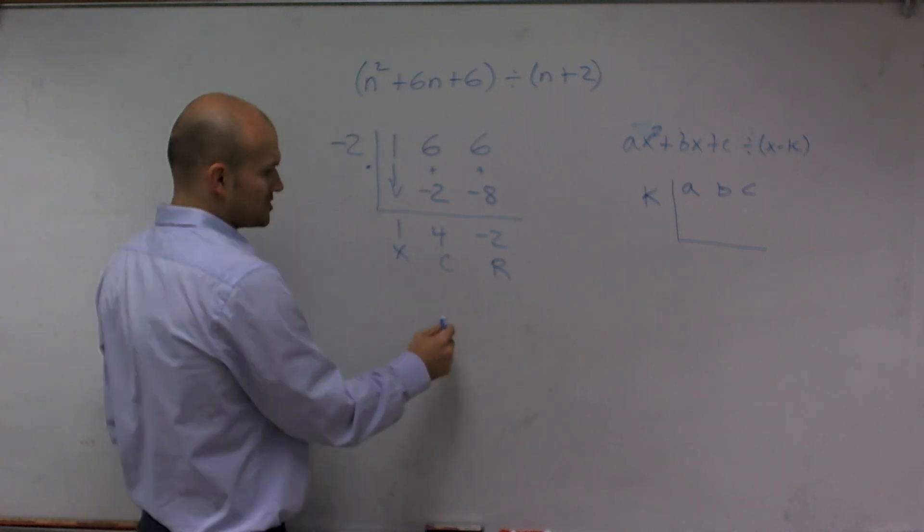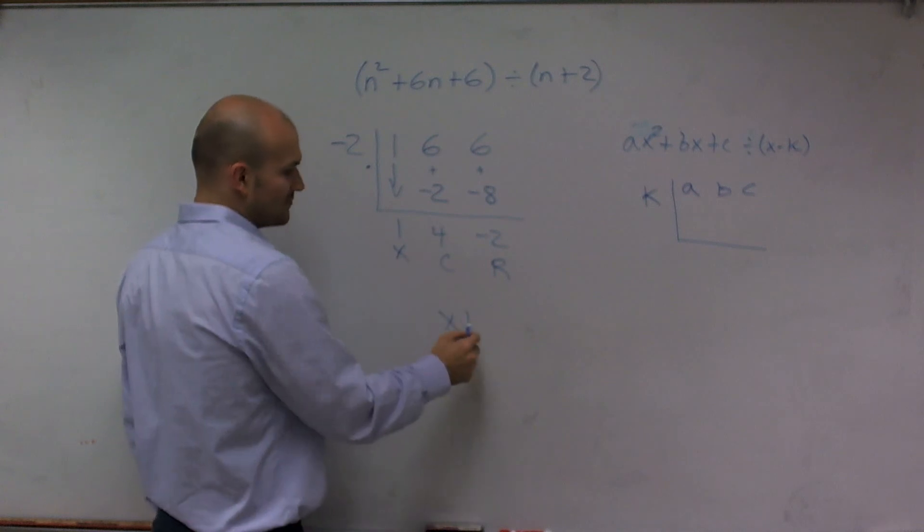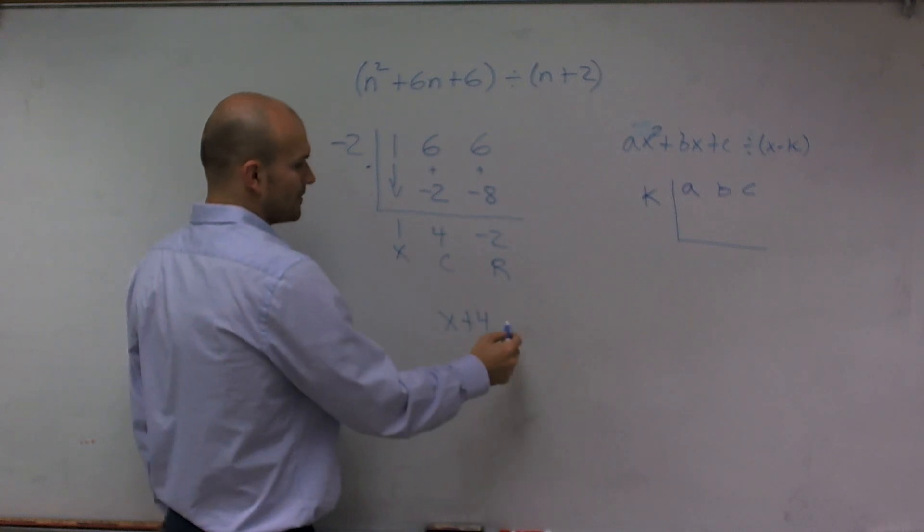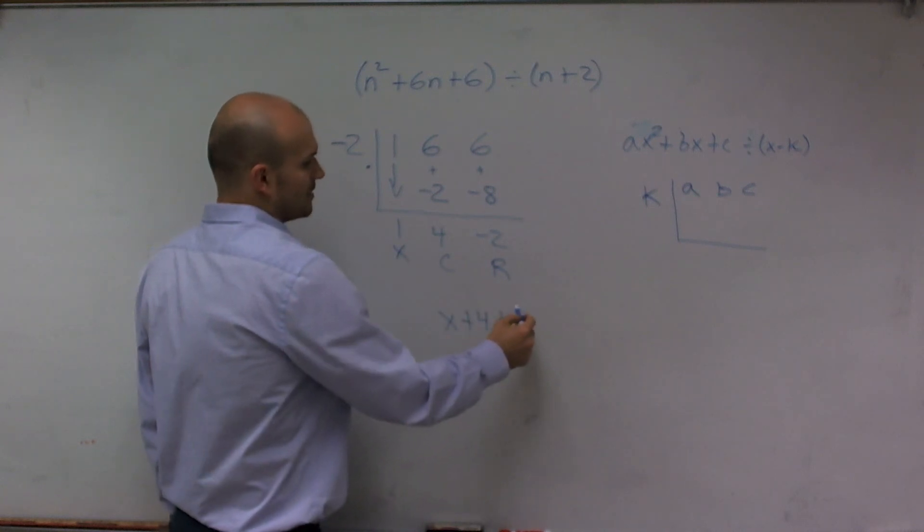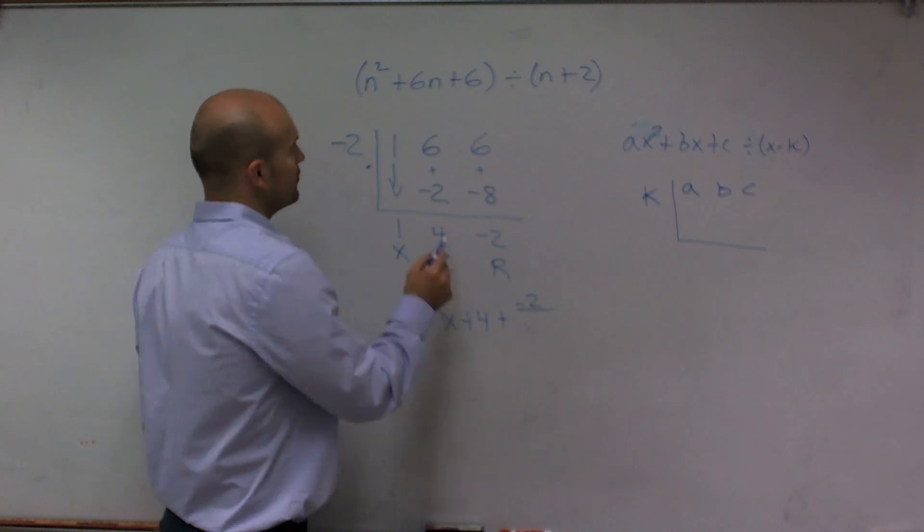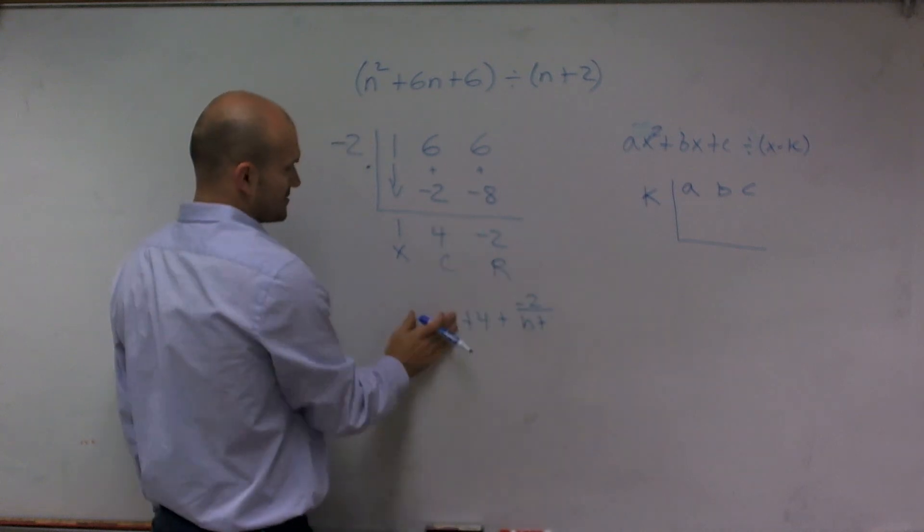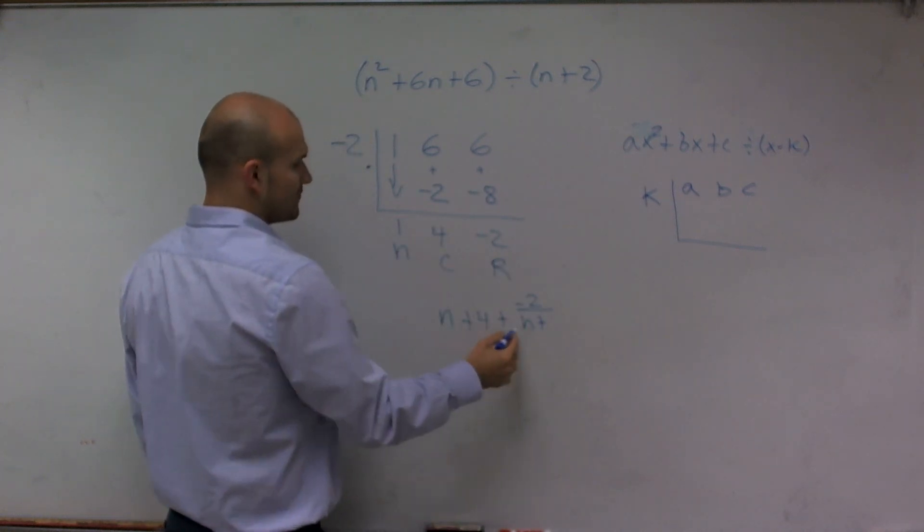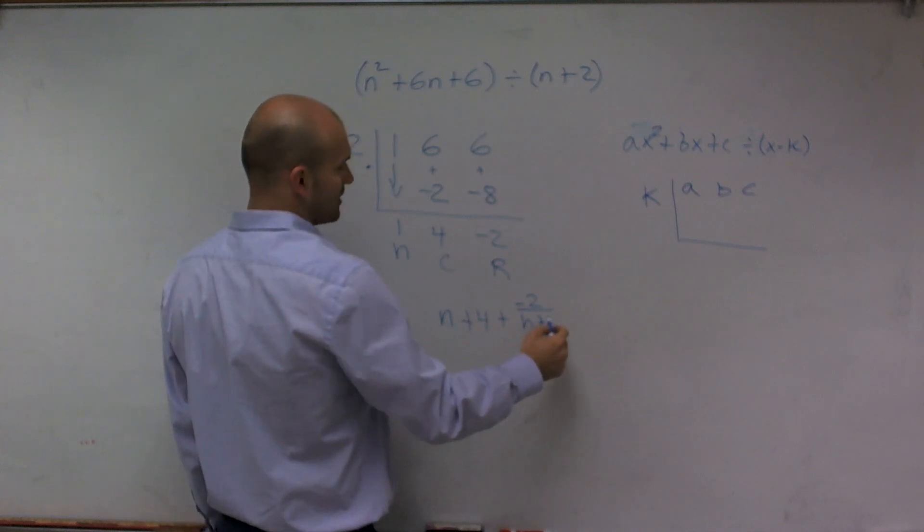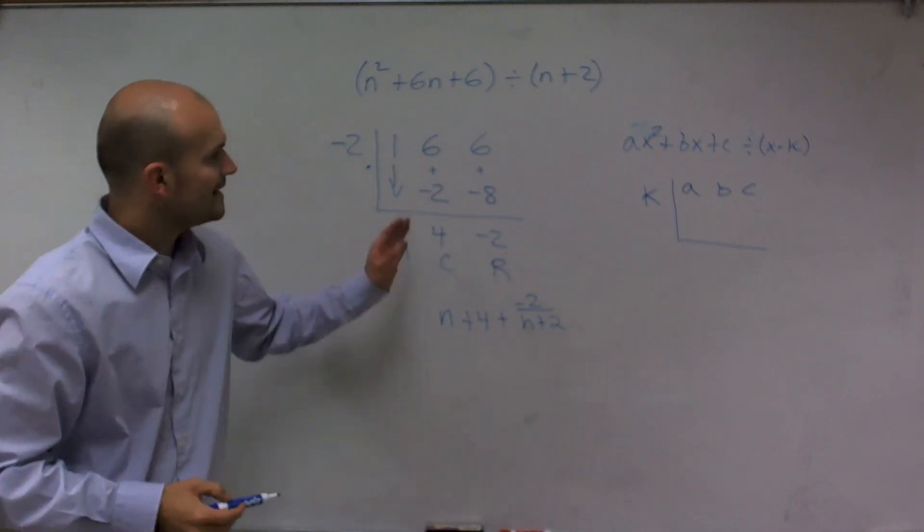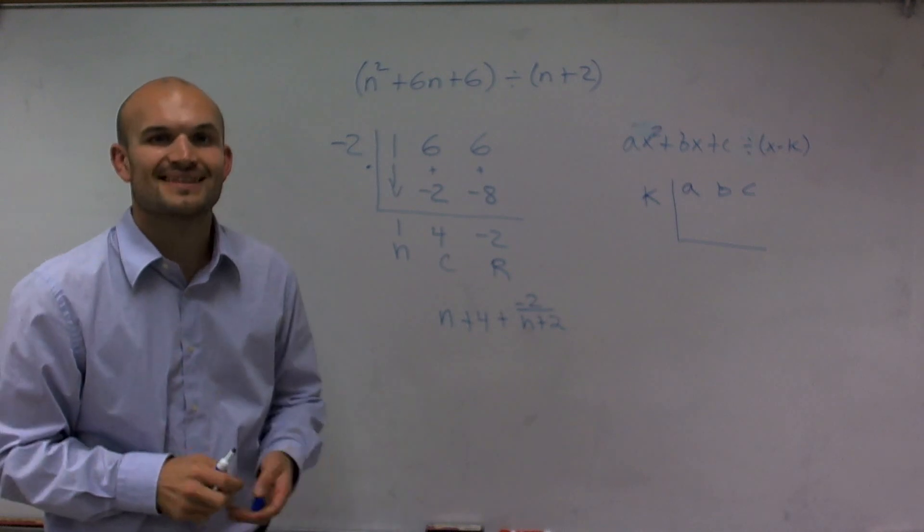So my final answer is going to be x plus 4. And then plus my remainder, negative 2, over my divisor, which is n plus... oh, this is using n, right? My linear term is n. n plus 4 divided by n plus 2. And that is how you follow the rules for synthetic division. Thanks.